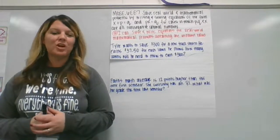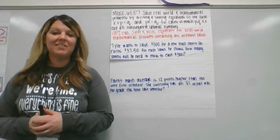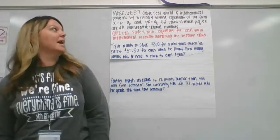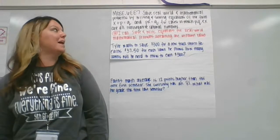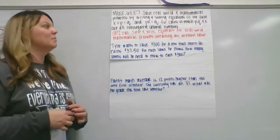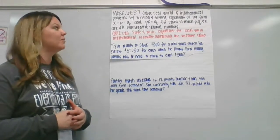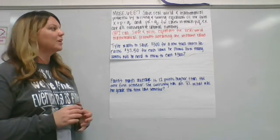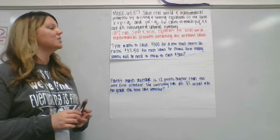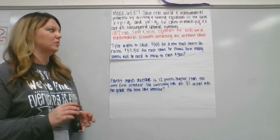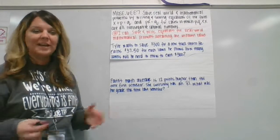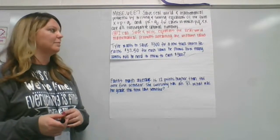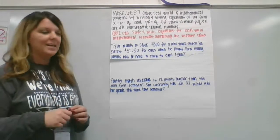Hey guys, this is your digital anchor chart for standard 6EE7, which says that you can solve one-step equations. It says solve real-world and mathematical problems by writing and solving equations of the form x plus p equals q and px equals q, for cases in which p, q, and x are all non-negative rational numbers. Your learning target: I can solve and write equations for real-world mathematical problems containing one unknown value.